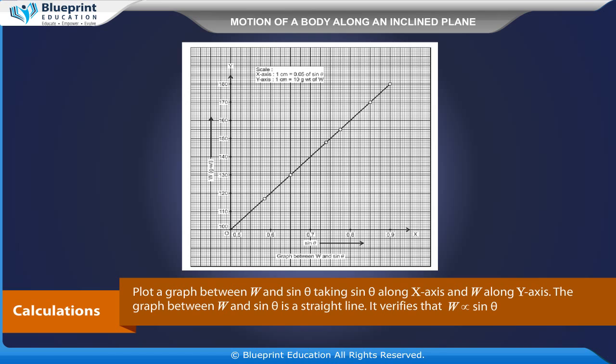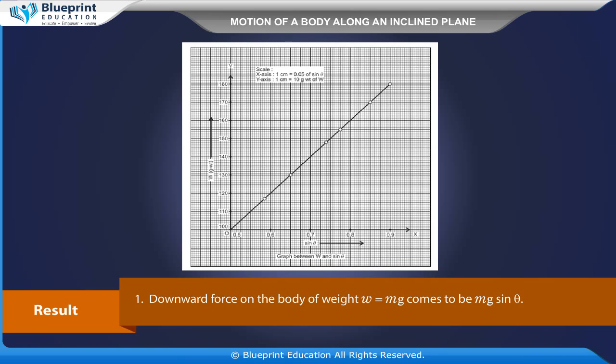Result: Downward force on the body of weight W equals Mg comes to be Mg sin theta. Graph between sin theta and W is a straight line. Therefore W is proportional to sin theta.